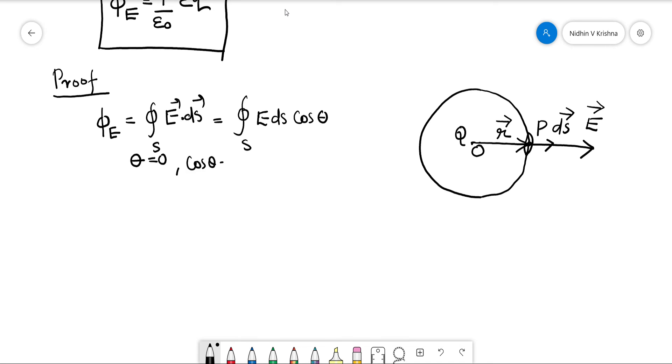Means phi_E equals closed surface integral of E into dS itself. Okay, you can see the sphere.